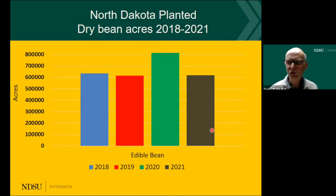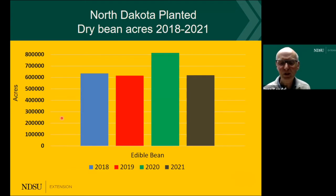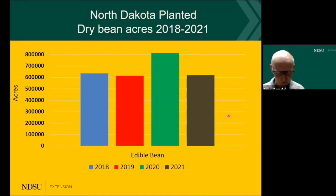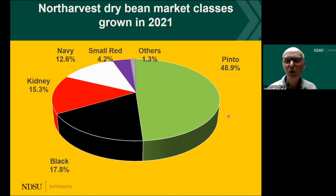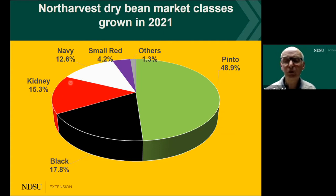Now transitioning into some ideas about varieties. In North Dakota the graph shows acres on the left and years from 2018 to 2021 — last year we had about 600,000 acres. The North Harvest bean grower survey was just published and I'm going to highlight a few items of interest. The majority of beans grown in the North Harvest area — which covers both North Dakota and Minnesota — is pinto, followed by black at about 18 percent, kidney in northwest Minnesota, and navy. I'm going to focus mostly on the pinto, black, and kidney.